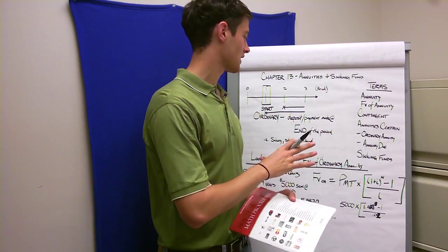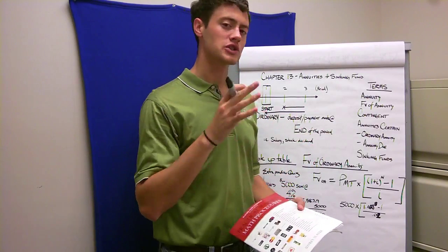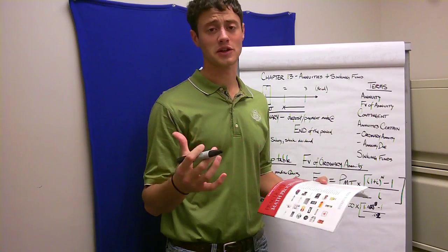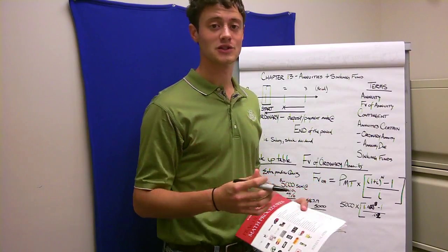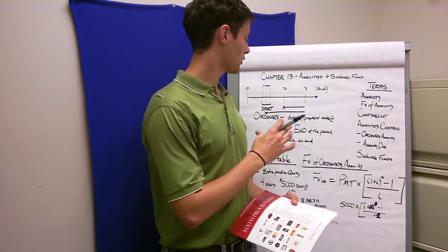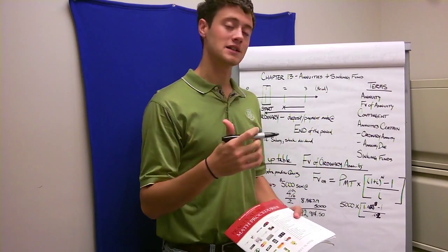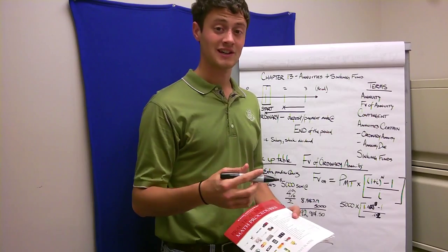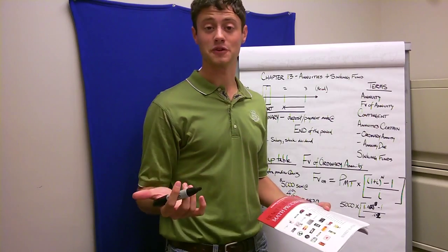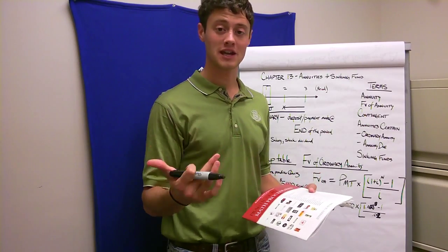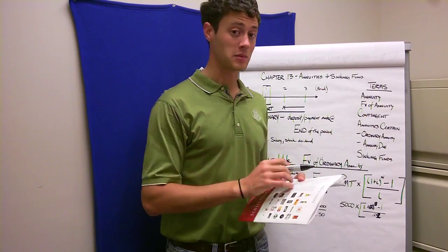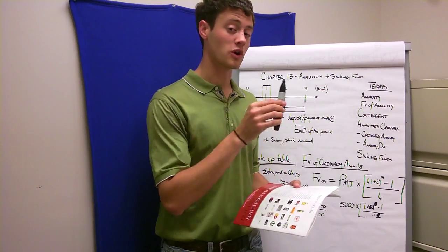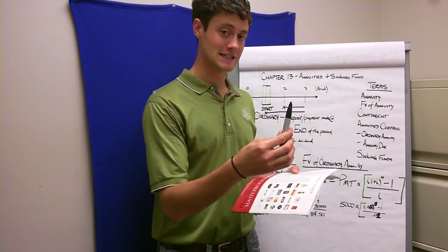What we're going to focus on is that you actually get one of these on a daily basis, or depending on the period, on a regular basis. An ordinary annuity is a deposit or payment made at the end of the period, such as a salary. So if you get paid every two weeks or every month, you work and then you get paid at the end.